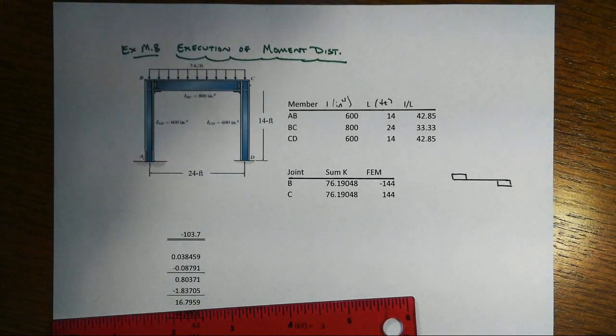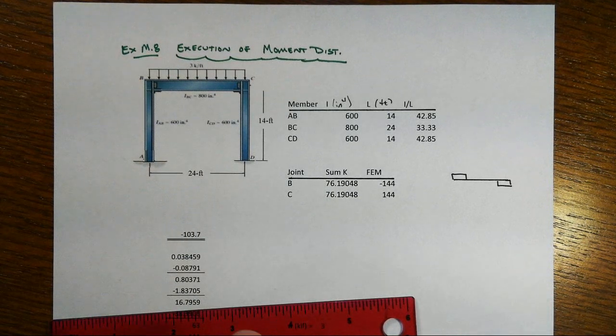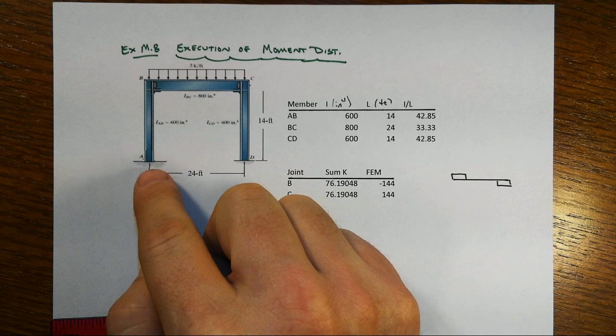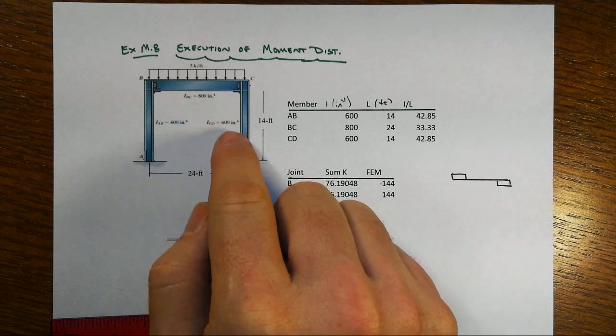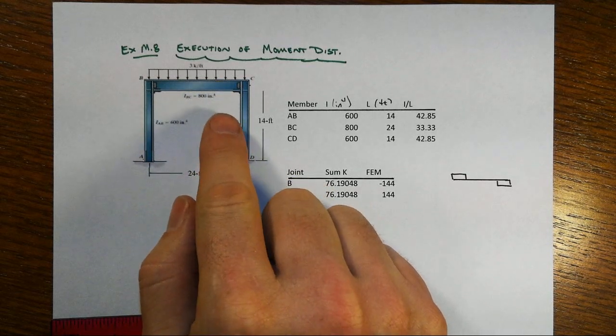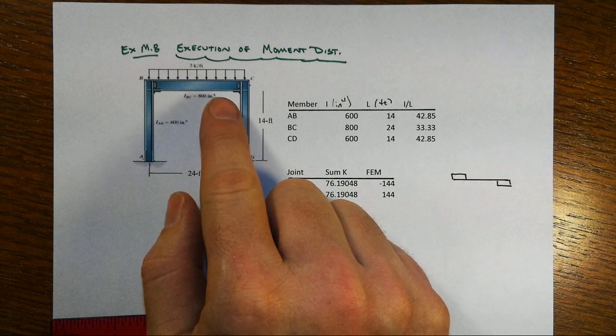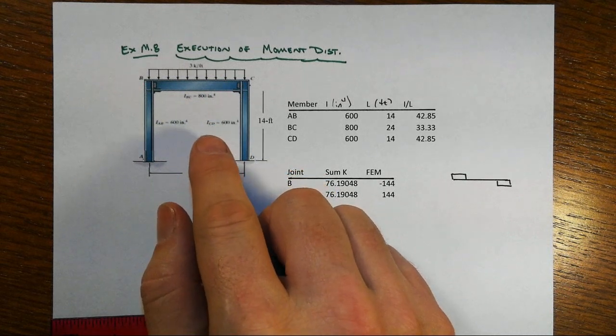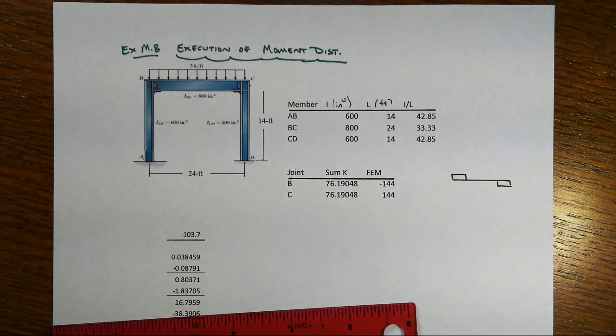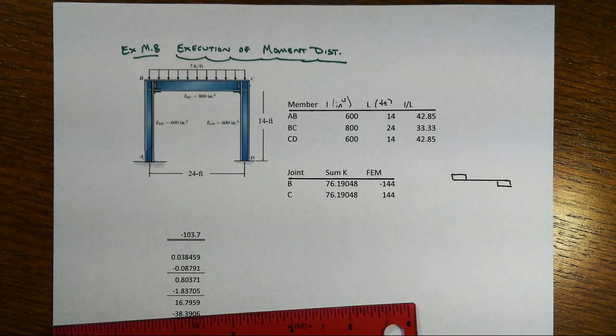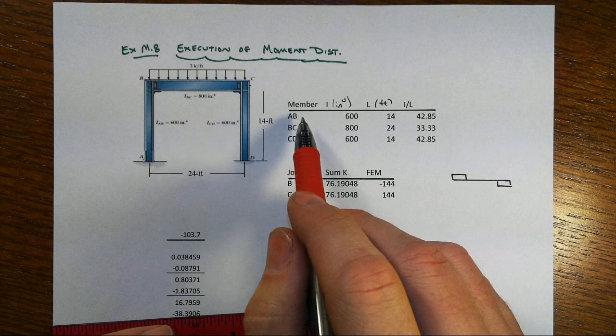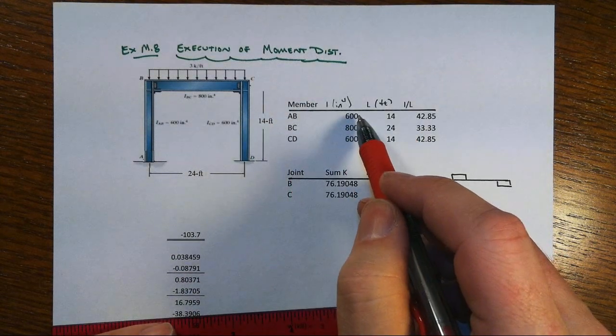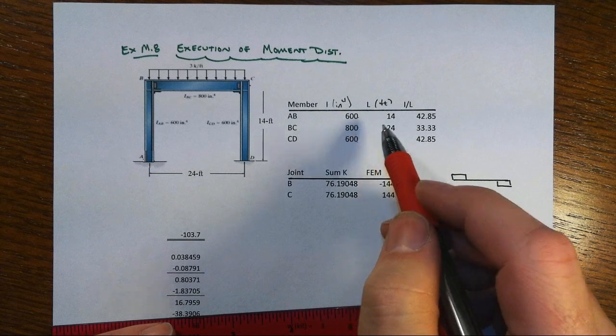In this execution of the moment distribution method to a single story portal frame, note that we've got the symmetric structure, symmetric foundations, and symmetric loads, so we're not going to include the fact that this thing could possibly sway because in this particular situation it won't, and that simplifies a lot of things for us. We've jotted down for each member what the second moment of area is.